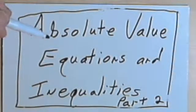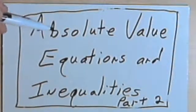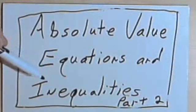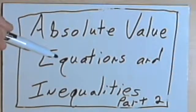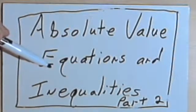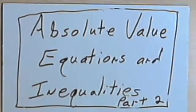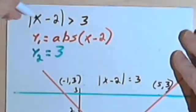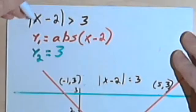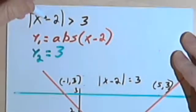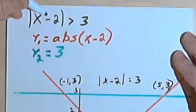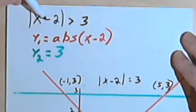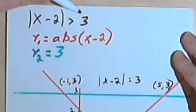This is the second video about solving absolute value equations and inequalities. I want to pick up where I left off with the first video and go on to inequalities. So here's what we have from the first video, but I've changed one thing — instead of saying the absolute value of x minus 2 equals 3, I've changed the problem to the absolute value of x minus 2 is greater than 3.